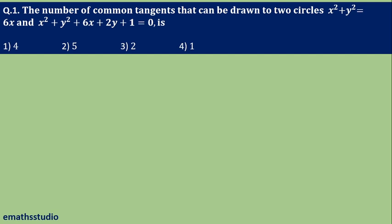Now let us check one question based on this theory. The question asks: how many common tangents can be drawn to the two circles x² + y² = 6x and x² + y² + 6x + 2y + 1 = 0?